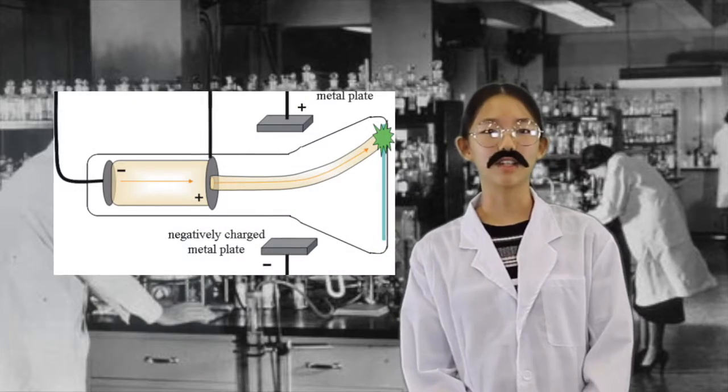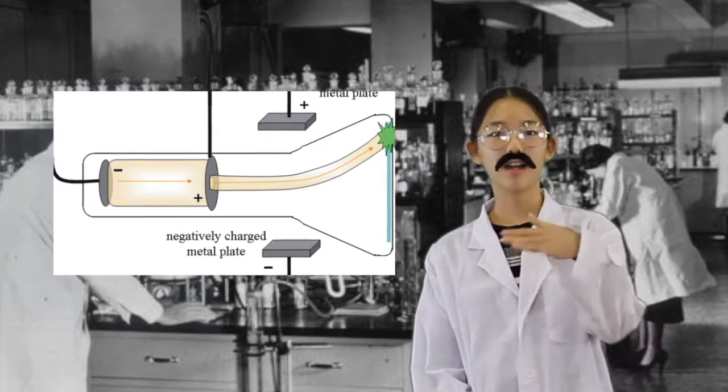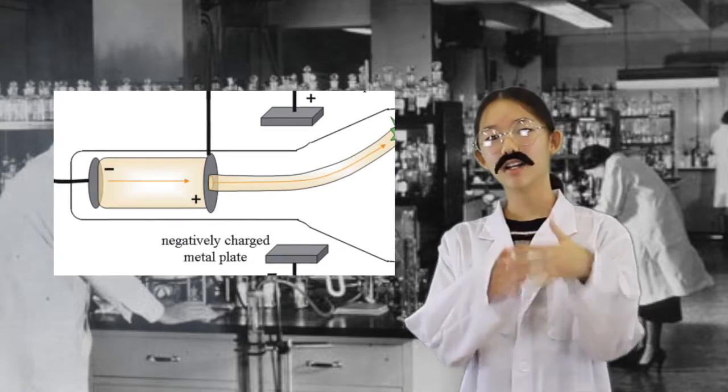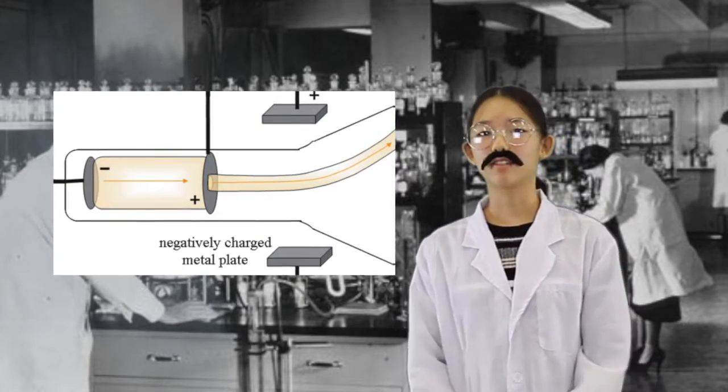When I put the positively charged metal at the top and the negatively charged metal plate at the bottom, the electricity attracts to the positive side. As you know, positive and negative repel each other, and the positive and negative sides attract each other. This means that the electricity is negatively charged because it pushes the negative side and attracts the positive side.